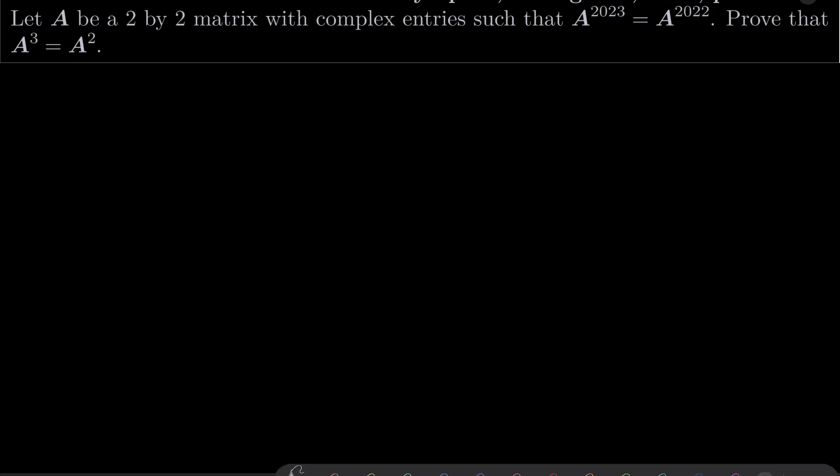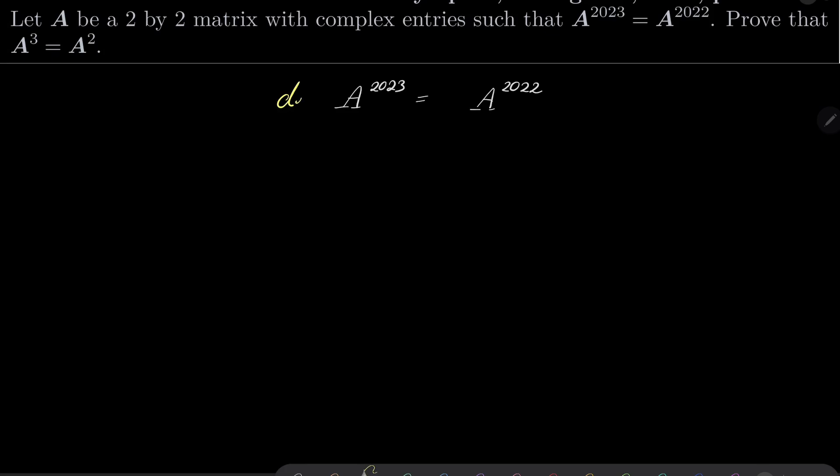Alright, so let's take our assumption that A to the power 2023 equals A to the power 2022 and let's take the determinant on both sides. One of the properties of the determinant is that the determinant of a product is the product of the determinants. So we can write the determinant of A to the power 2023 equals the determinant of A to the power 2022.